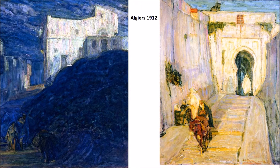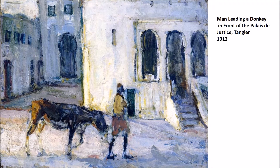Moving slightly off the biblical narrative, we have Algiers from 1912, a continuation of his study of North Africa and its architecture. We also have A Man Leading a Donkey in Front of the Palais de Justice in Tangier — this is very abstract, relying heavily on building up canvas layers, with texture telling as much of a story as anything. Look at how little is actually put on the surface and how he's hinting at areas of the location rather than directly describing them.